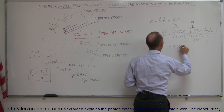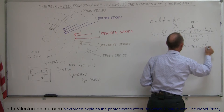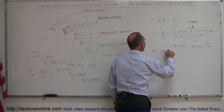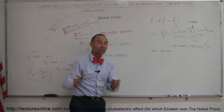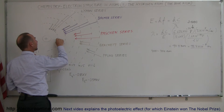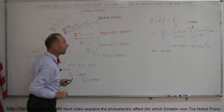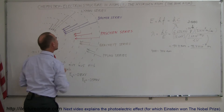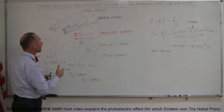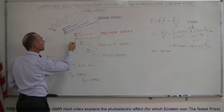That is 91.4 nanometers, or 91.4 times 10 to the minus 9 meters. What kind of photon is that? Visible light ranges from 400 to 700 nanometers, so 91.4 nm is shorter than visible light — placing it in the ultraviolet radiation band. To ionize hydrogen by taking an electron from the innermost energy level and completely freeing it, you need a photon of at least that energy — an ultraviolet photon. Anything with less energy cannot ionize the atom; it can only move the electron to a higher level.